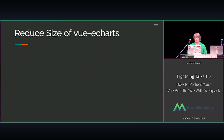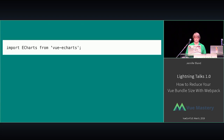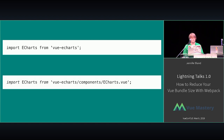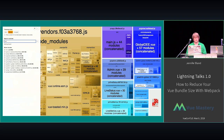The last thing I went after was Vue eCharts, the biggest remaining item. I was originally importing eCharts and pulling in the whole thing. They have a minified version you can use by simply changing your import to that. As a result, my bundle, which used to be 2.48 megabytes, is now down to 1.28 megabytes.